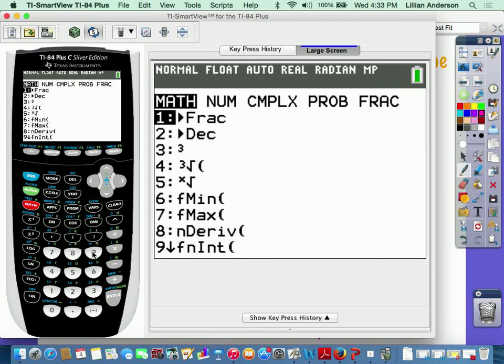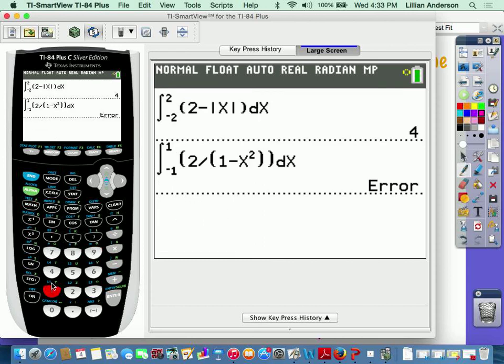So again, press math, number 9, lower bound, upper bound. 2 divided by 1 plus x squared. And then close off the parentheses, dx.